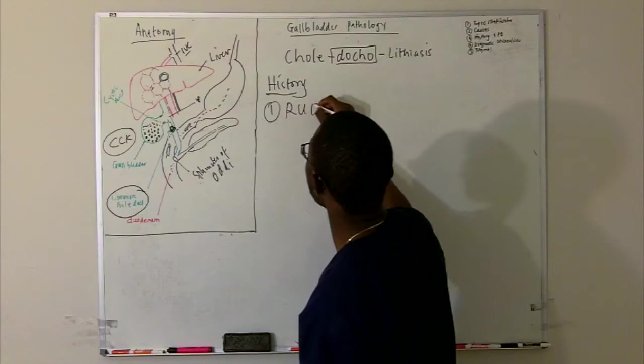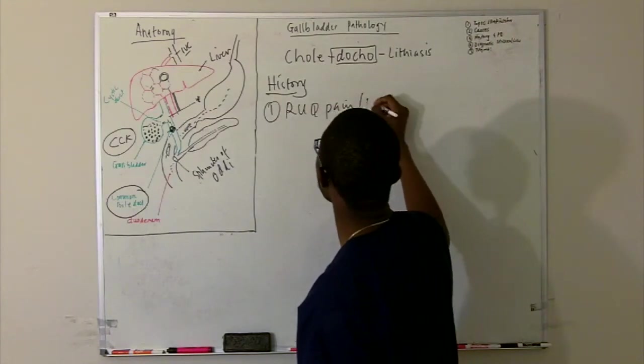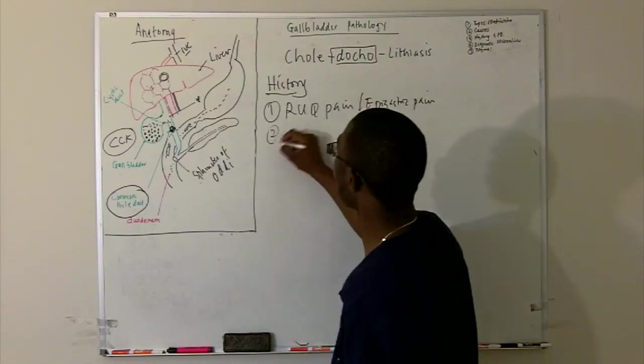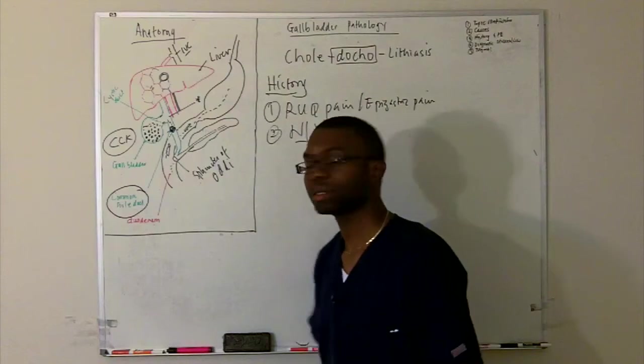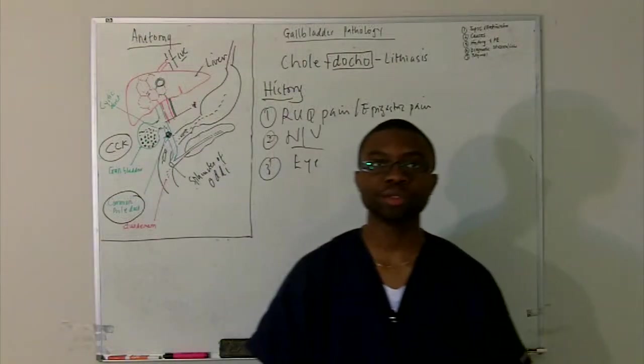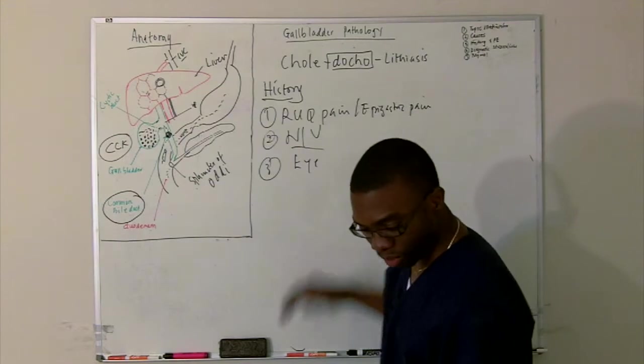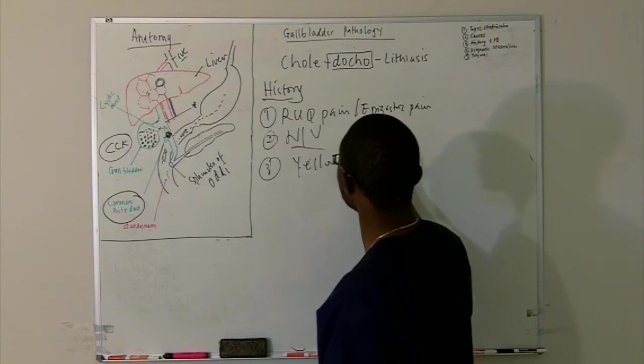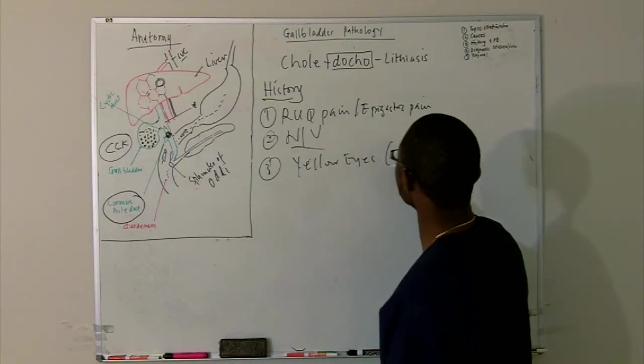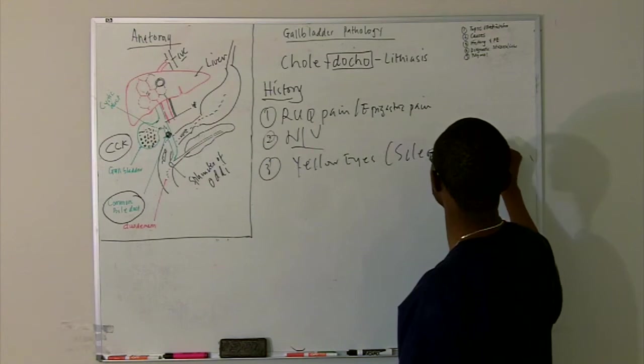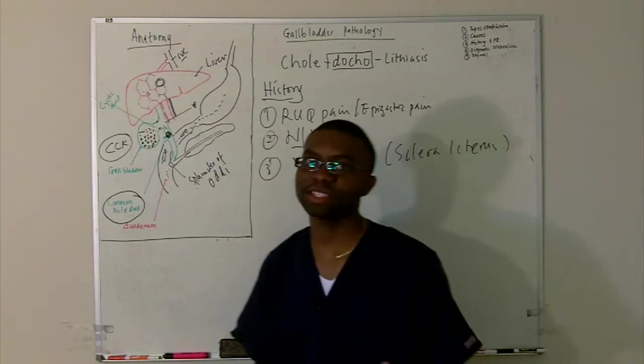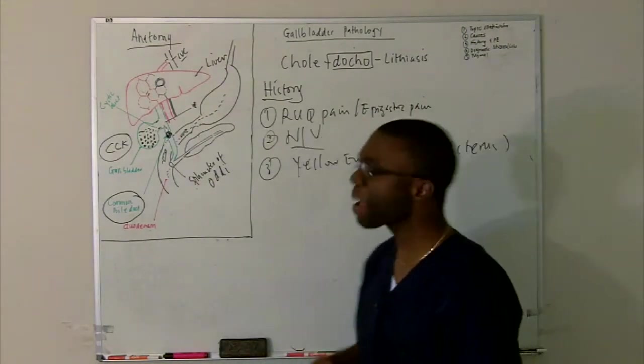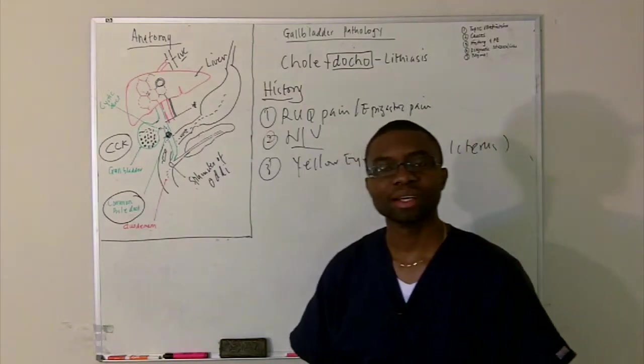First history, right upper quadrant pain or epigastric pain. They're nauseous. They're vomiting. They tell you their eyes are yellow. Yellow eyes. In medicine, we call that scleral icterus, which is a fancy name for yellow eyes. Then you wonder, nausea, vomiting, right upper quadrant pain, epigastric pain, and jaundice.